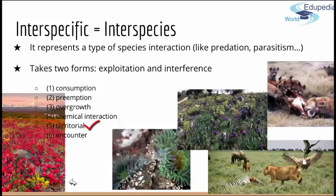Territorial competition results from the behavioral exclusion of others from a specific space that is defined as the territory. And then we have encounter competition, which results when non-territorial meetings between individuals negatively affect one or both participants. For example, various species of scavengers fight over the carcasses of dead animals.